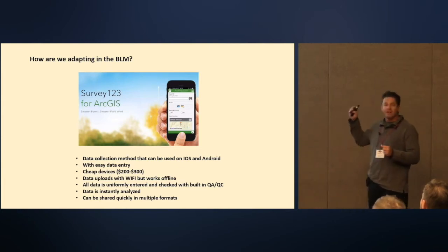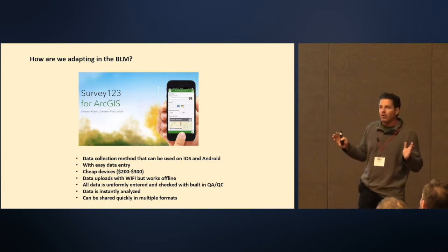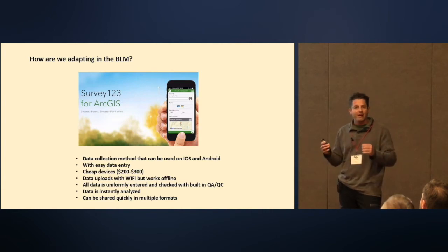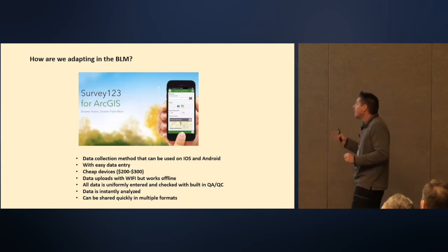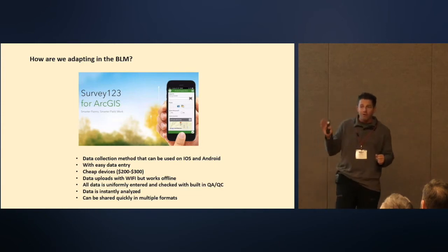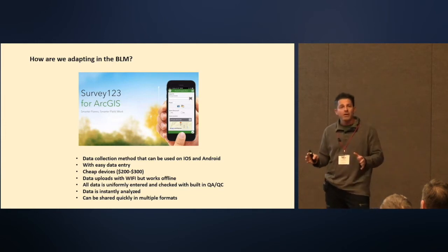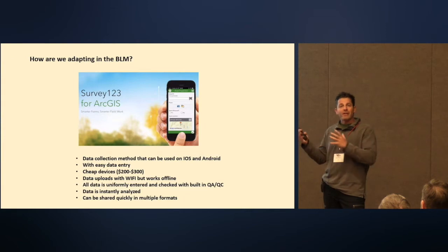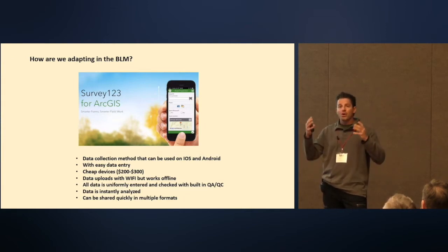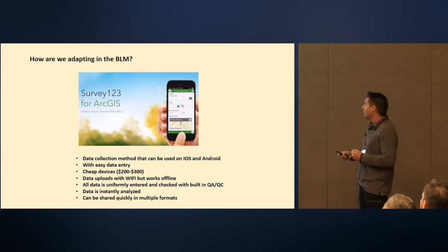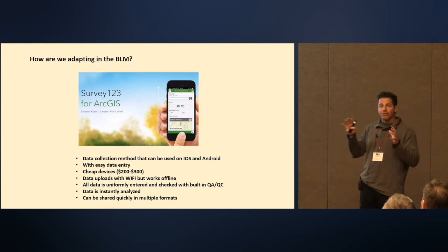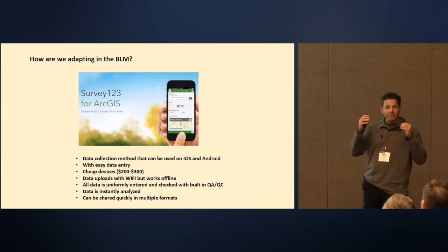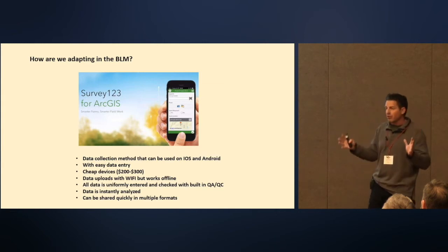We needed to give them something they could use. These devices are super cheap — we can get them for as little as $100. If it makes it one field season for $200, that's fantastic. Data uploads with Wi-Fi but works offline, so when you're working in remote Montana, you can work offline and once you hit a cell signal, all that data is uploaded to the cloud. You can build an infinite amount of QA/QC into the data forms, so if somebody enters something that isn't right, there's a prompt — they can correct it right away.